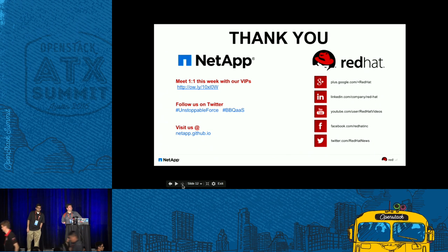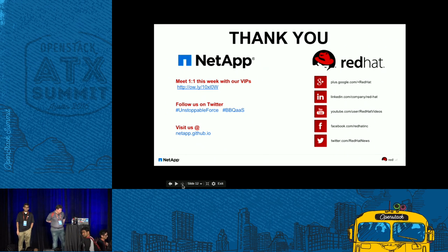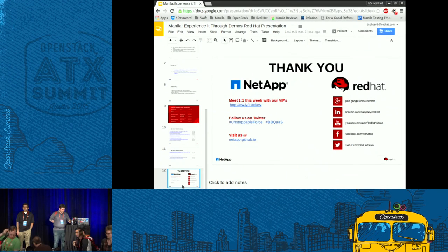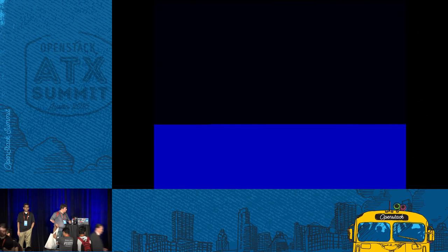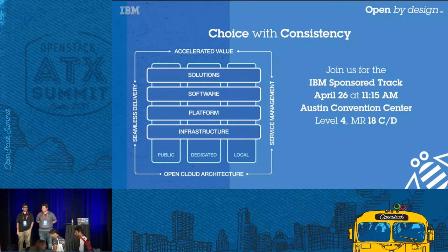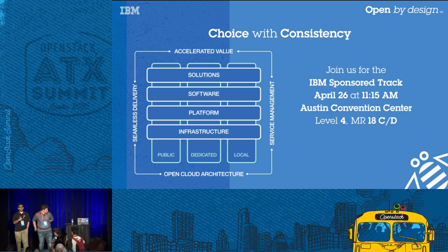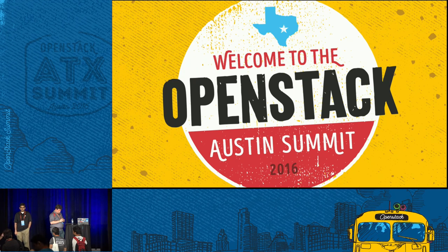We have time for a couple of short questions. On the replication side, you showed replication working with SnapMirror. Is it possible to use vendor-agnostic replication plugins? And is it possible to define custom plugins? Right now we're actively looking for other vendors to be part of Manila and use share replication. If you use NetApp, you can use replication. ZFS also supports it. Can you replicate from NetApp to ZFS? No, we can't do cross-vendor replication like that currently.